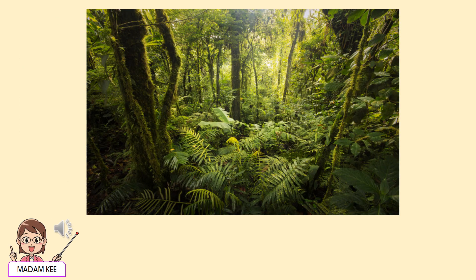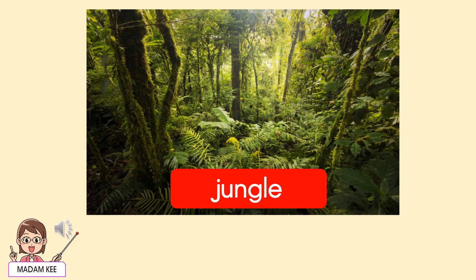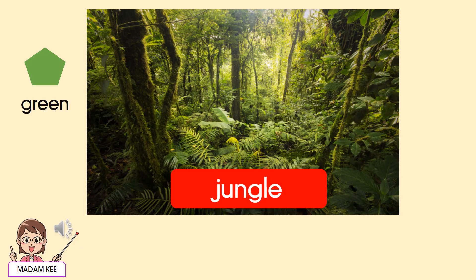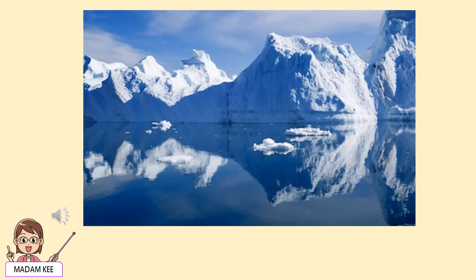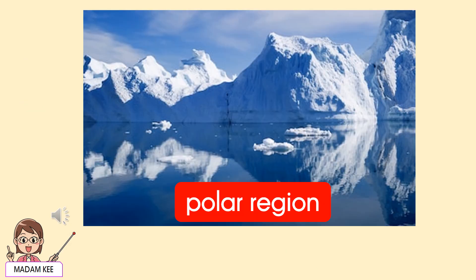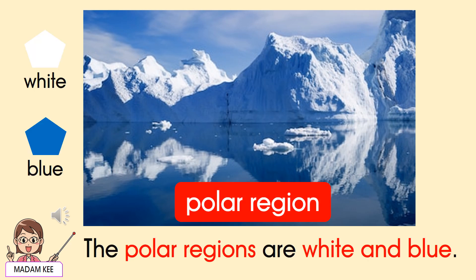Now, say the sentence after me. Jungle. The jungles are green. Polar region. The polar regions are white and blue.